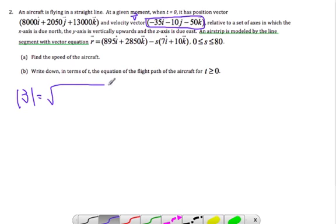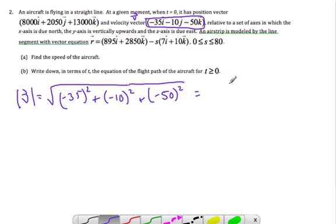So I'm going to find the square root of negative 35 squared plus negative 10 squared plus negative 50 squared. When I do that, that's the square root of 3,825 which ends up being about 61.8. That's to three significant figures. We haven't given any units here at all, so maybe it's meters per second, we don't know. That's part A, just the magnitude.